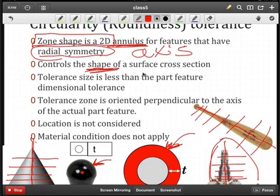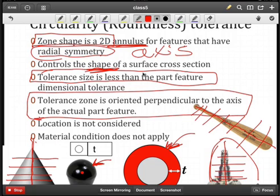The tolerance size is less than the part feature dimensional tolerance. And that just makes sense in terms of tighter control. So you're not going to see a tolerance size greater than that. And then it's going to have an orientation. Now this is the only shape feature that we've looked at so far that does have this orientation.